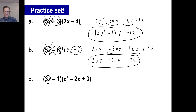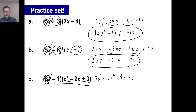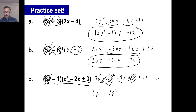Now problem c. First we'll do 3x all the way across. 3x times x squared is 3x to the third power. 3x times negative 2x is negative 6x squared. 3x times 3 is 9x. Now negative 1 times everything across: negative 1 times x squared is negative x squared. Negative 1 times negative 2x is positive 2x. Negative 1 times 3 is negative 3. No other cubed terms, so write 3x to the third. Negative 6x squared minus x squared is negative 7x squared. Then 9x plus 2x is 11x, minus 3. And there you go.